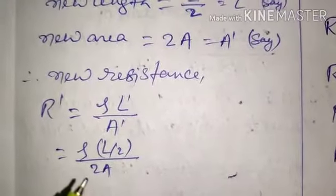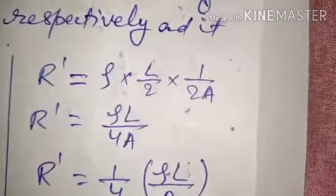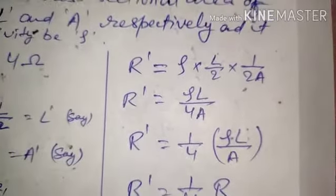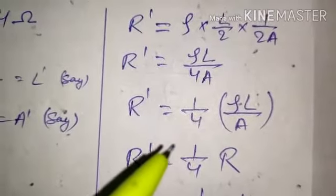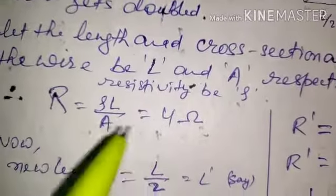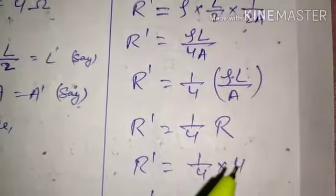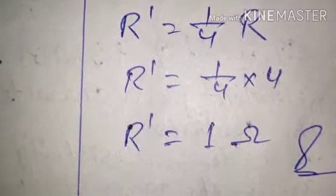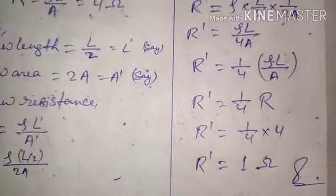Substituting L' = L/2 and A' = 2A into R' = ρL'/A', we get R' = ρ(L/2)/(2A) = ρL/4A = (1/4)(ρL/A). Since ρL/A is the original resistance R = 4 ohm, we get R' = (1/4) × 4 = 1 ohm. So the new resistance R' = 1 ohm is our answer. I hope things are clear; we will continue in the next class.